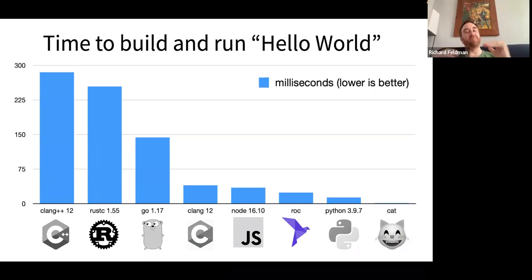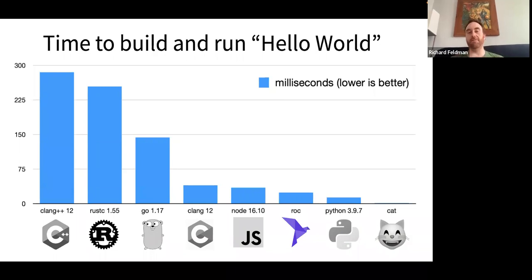We'd like to catch up with Python if we can. But compared to JS and Python, Roc is doing full type checking, type inference, and compiling to machine code, whereas JavaScript and Python are just executing on a virtual machine without any type checking.